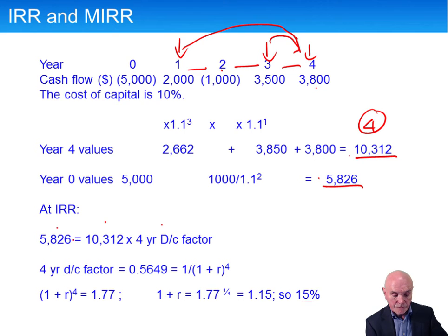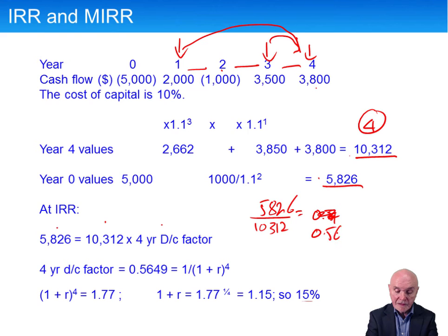So if we divide this through, so we're going to divide 5826 by 10,312, that's going to be that. So basically we're saying 5826 divided by 10,312 equals 0.5649. And that will be the four year discount factor we need.